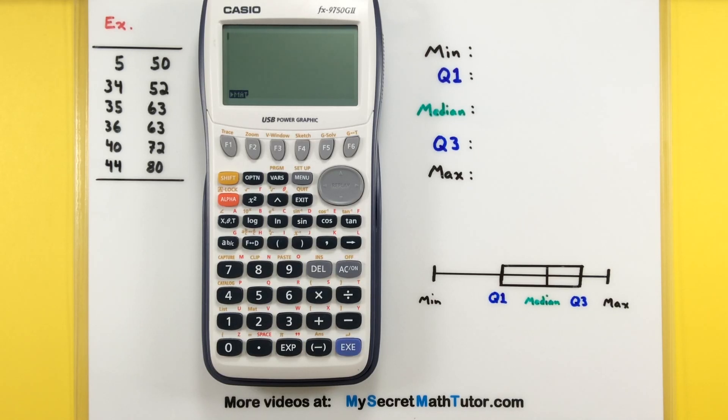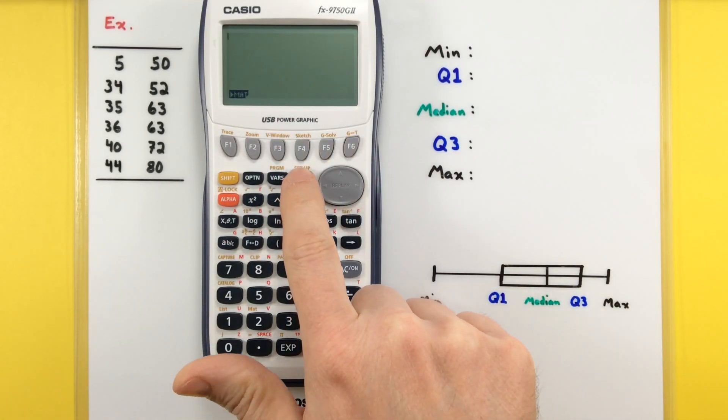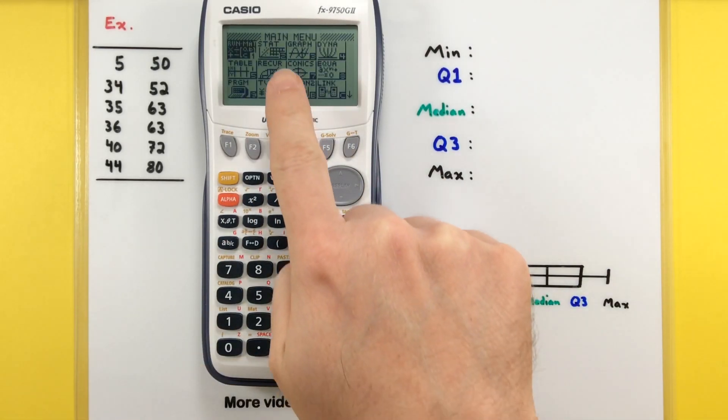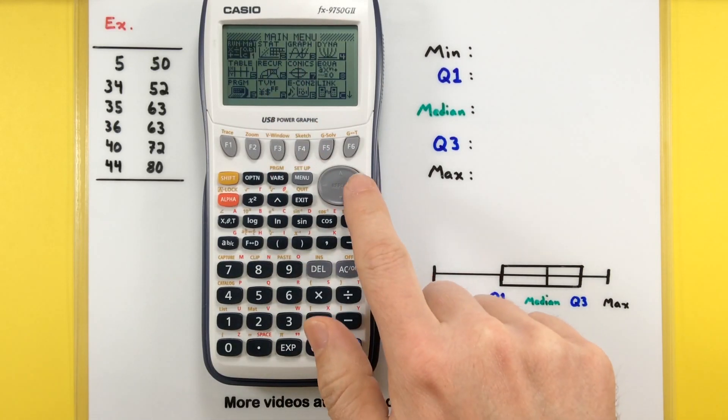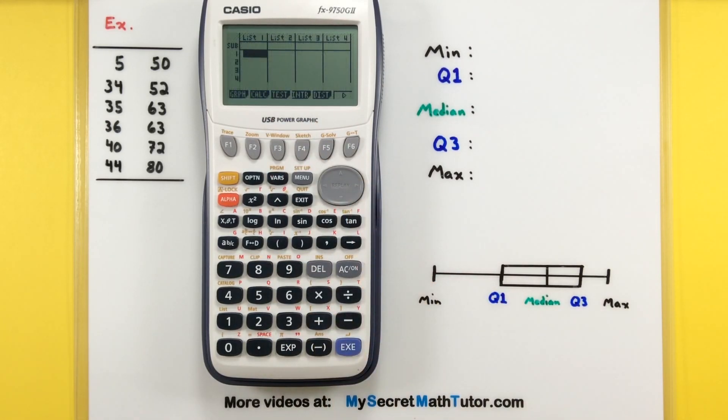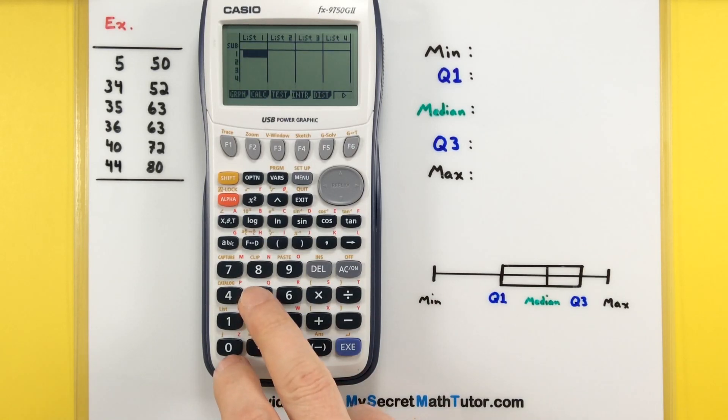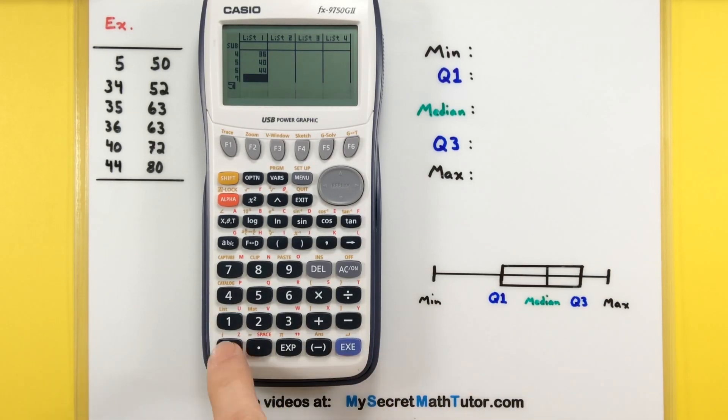Now the best place to do this is in the stat menu. So right now I'm on the run menu, so go ahead and press your menu button and select over where it says stat. Excellent. Now I have 12 data points here. I'm just going to enter them into the calculator one at a time. Don't worry, I'll speed this up so you're not sitting here waiting.